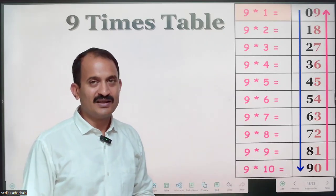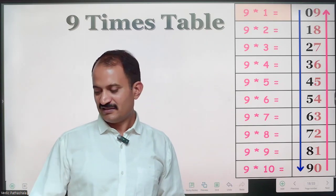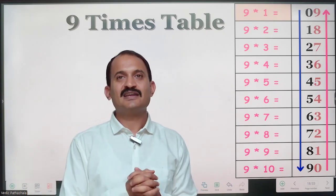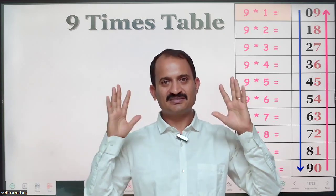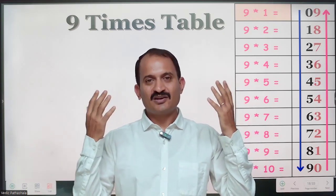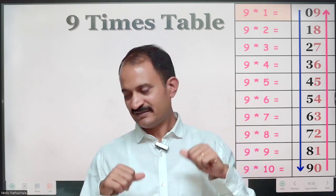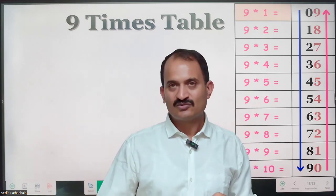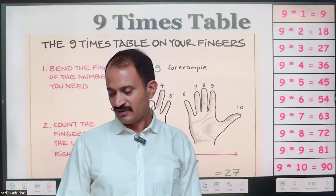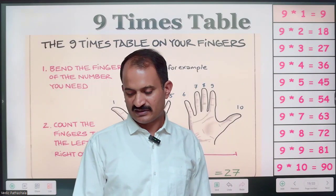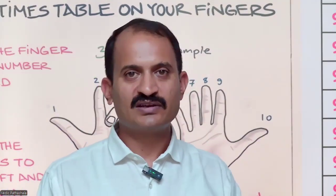There is another method you can easily use, and this table is based on your fingers — 10 fingers. With the help of these fingers, you can easily remember the table of 9. I will show you in the next slide how that works. Before showing that, I will demonstrate on the screen.